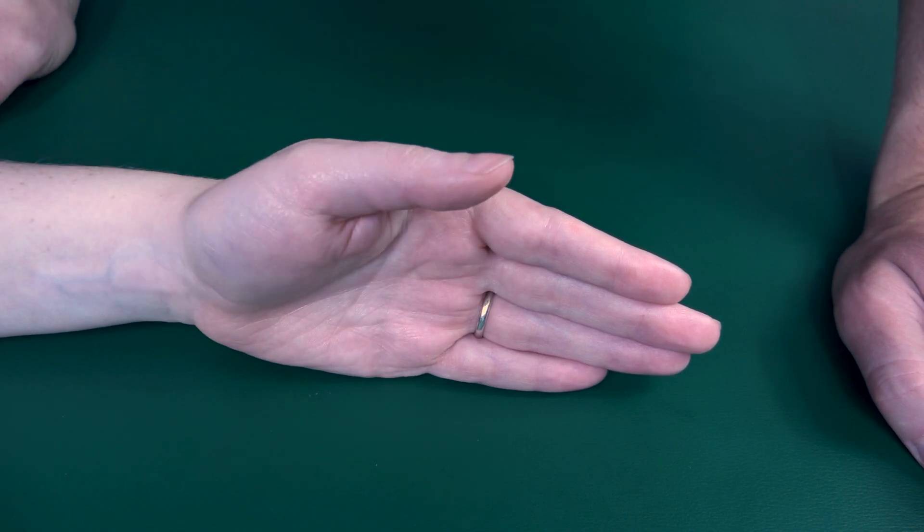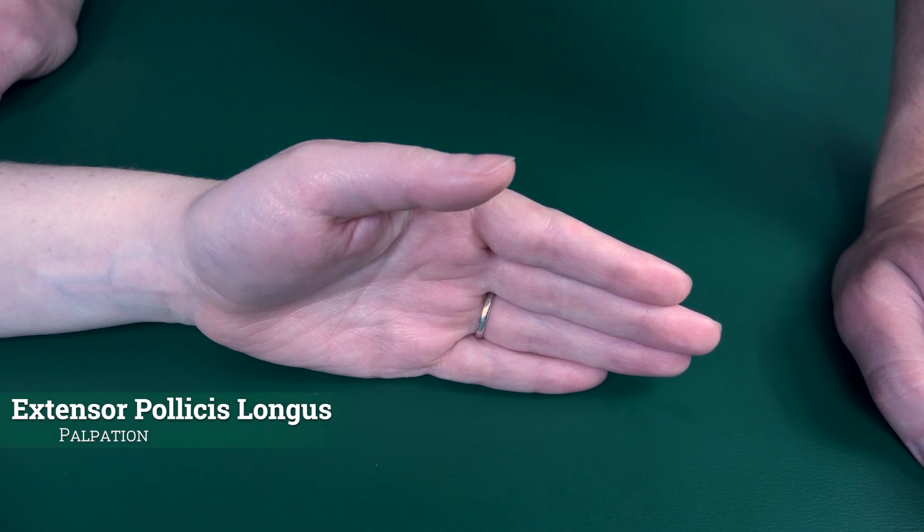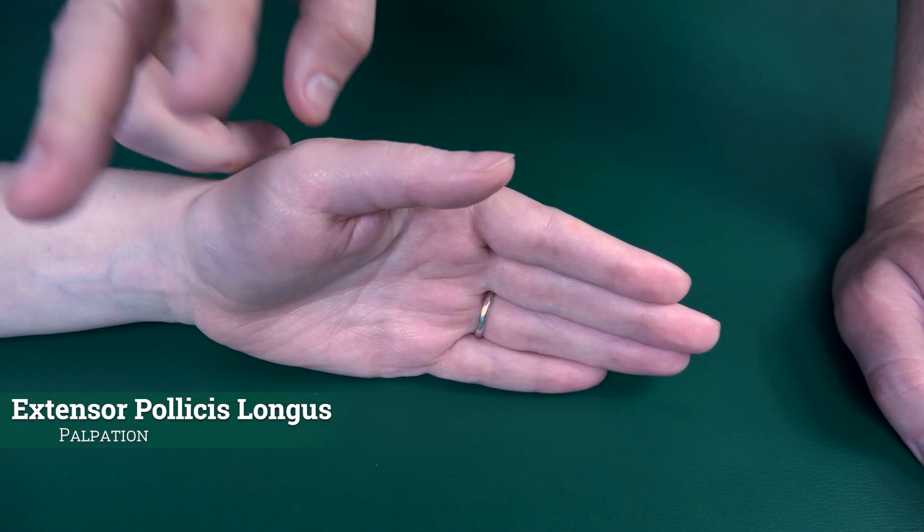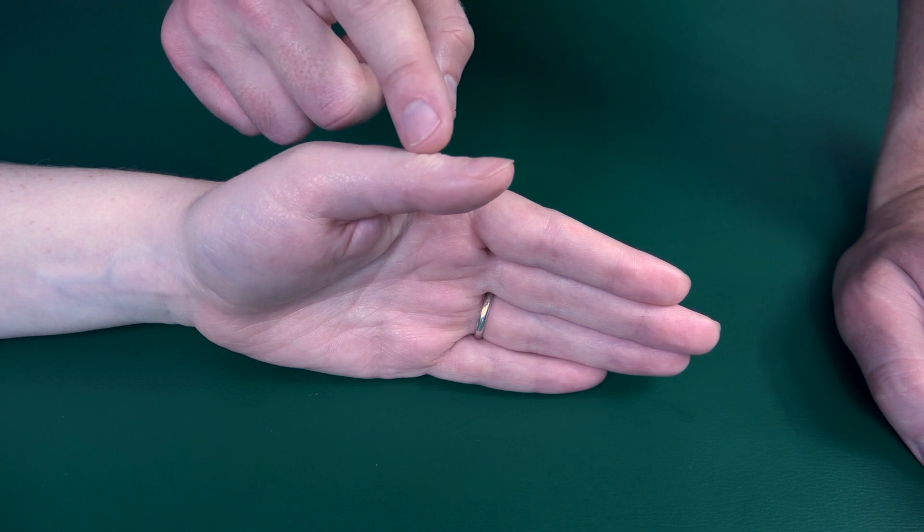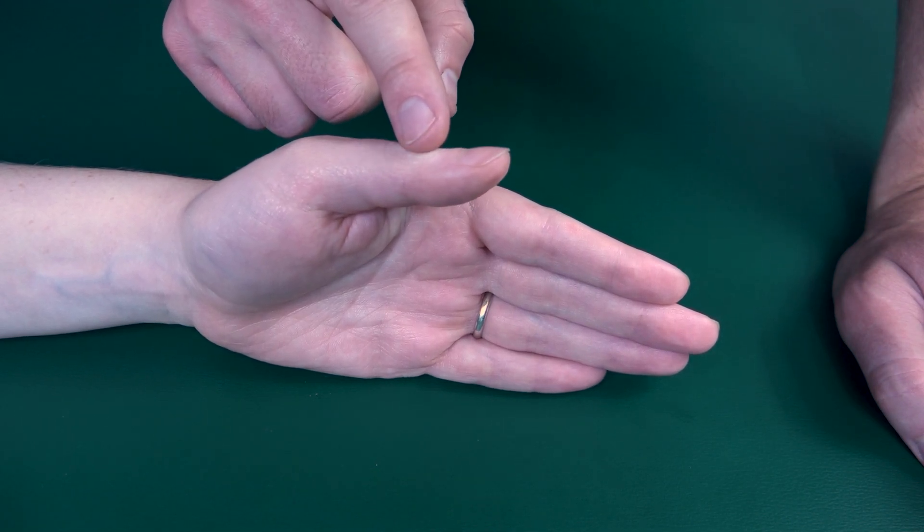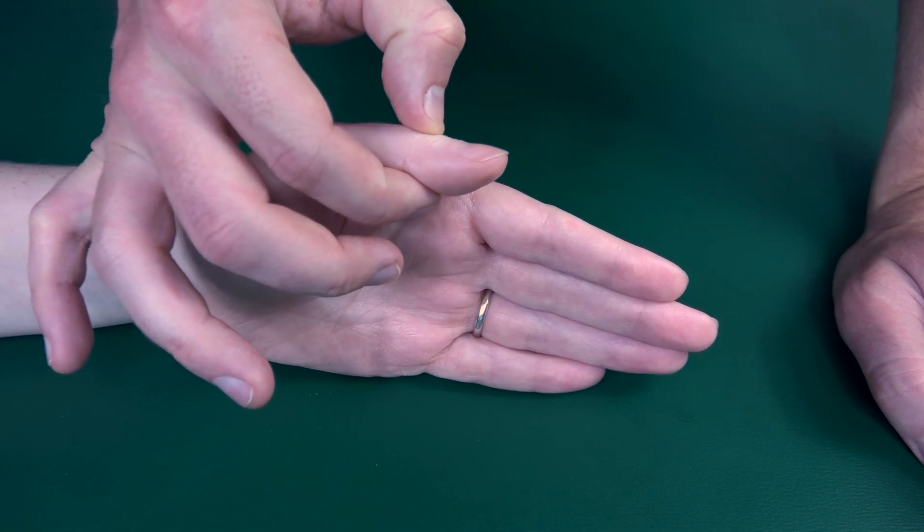If there's minimal movement into extension, I will palpate the extensor pollicis longus, which can be palpated in two areas. One area will be just distal to the IP joint here. You palpate there, or you can palpate just right here...